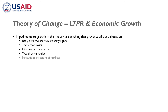The institutional structure of markets is a further impediment. If the land market is set up in a way that certain social groups don't participate or can't participate on equal footing with others, then even if they are the most efficient users of land or have a strong desire and ability to utilize that land, they still may not be able to acquire it. These are the kinds of impediments that crop up all over the world.